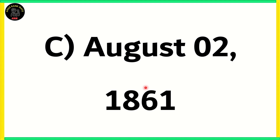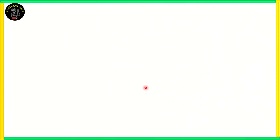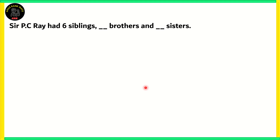Sir P.C. Ray was born on August 2, 1861, in the village of Rarulika Tipra, which is now in present-day Bangladesh. Next question: Sir P.C. Ray had six siblings — blank brothers and blank sisters. Options are: A) Five brothers and one sister, B) Four brothers and two sisters, C) Three brothers and three sisters, or D) Two brothers and four sisters.